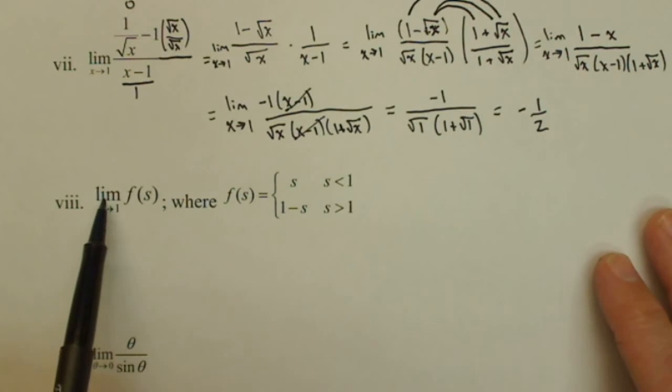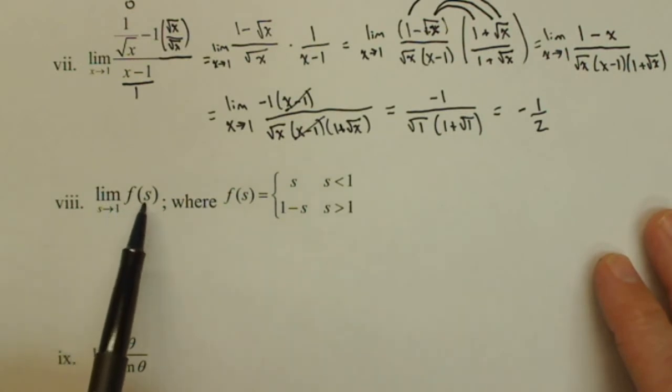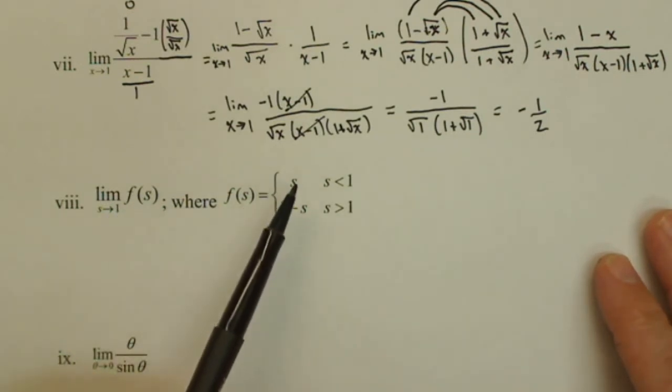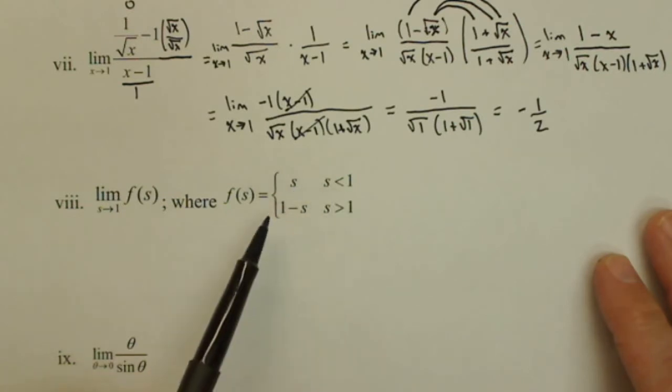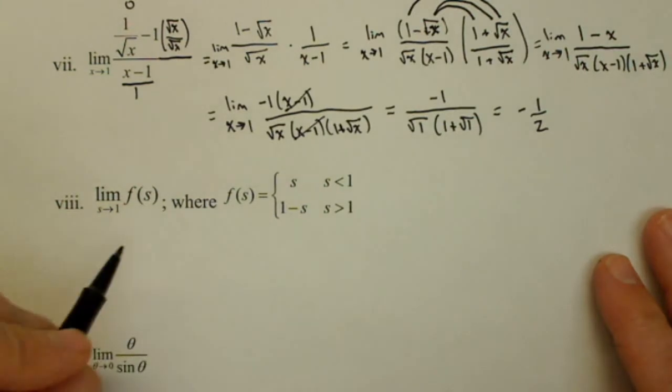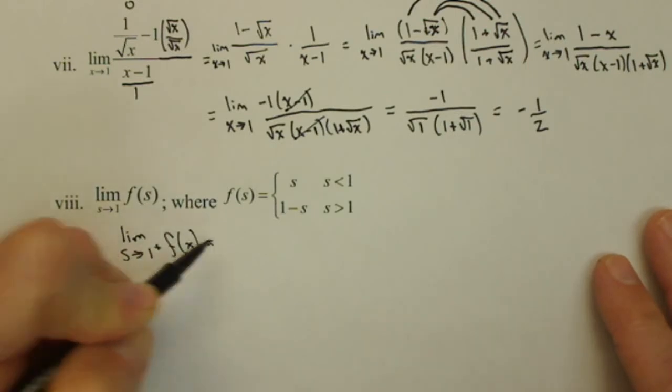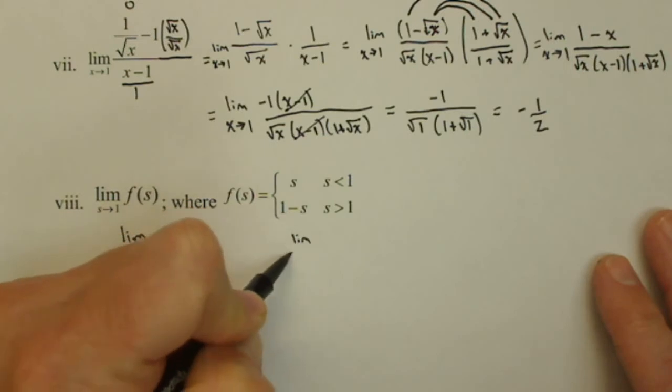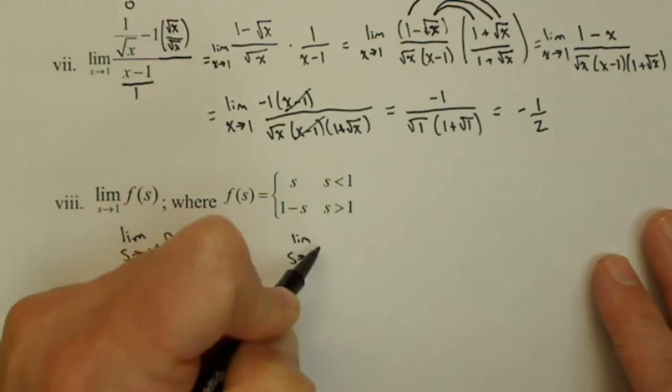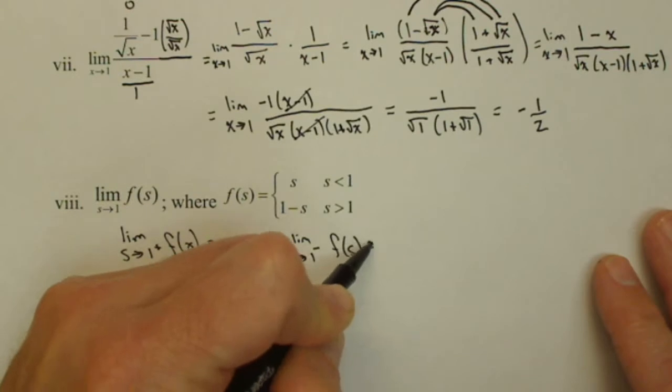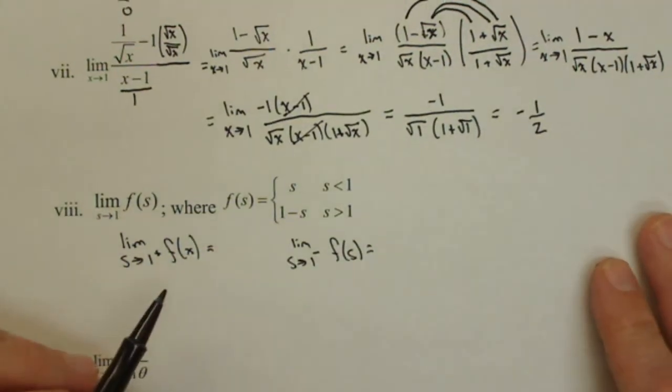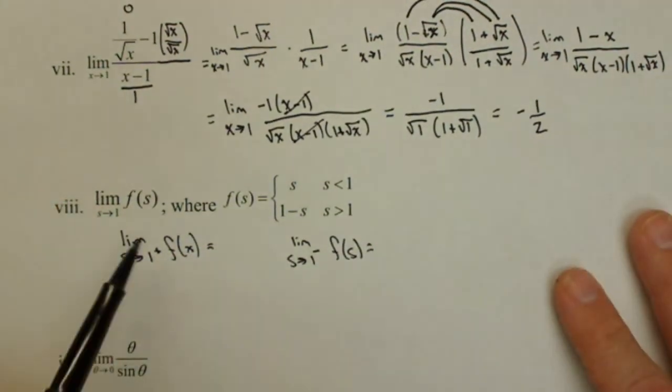Okay, now we're doing the limit as s approaches 1 of f of s, where f of s is given by the piecewise function: s if s is less than 1, 1 minus s if s is greater than 1. So what we're going to do is we're going to look at two one-sided limits. We're going to look at the limit as s approaches 1 from the right of f of s, and the limit as s approaches 1 from the left of f of s. If those are equal, we have a limit and we're done. If they're not equal, then the limit does not exist.